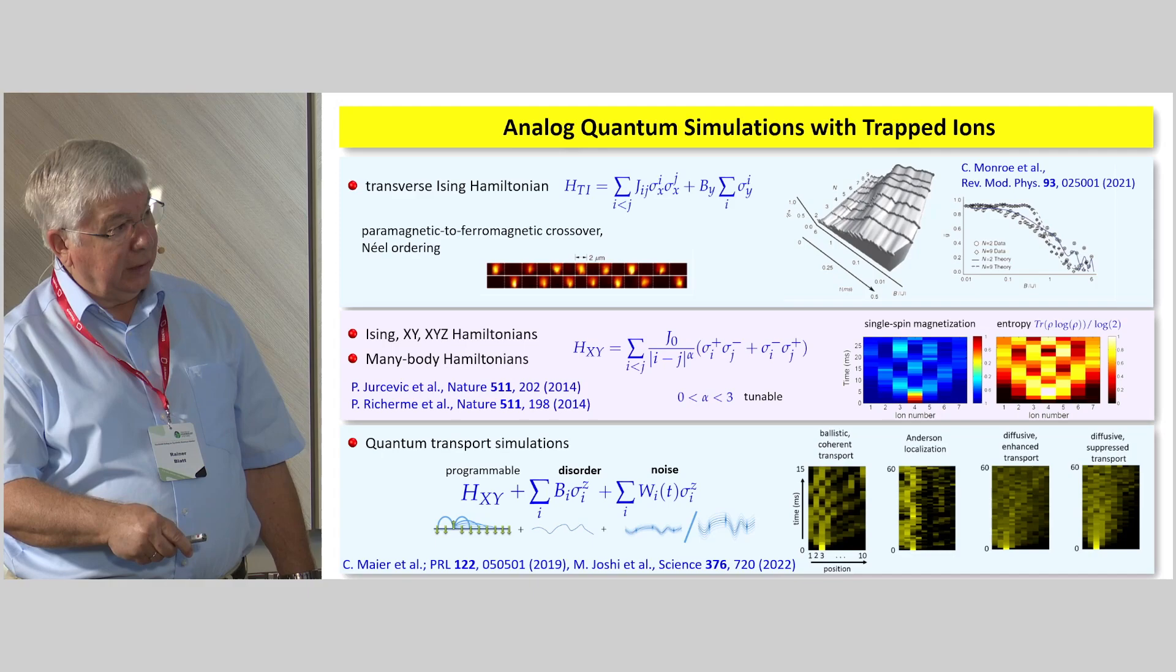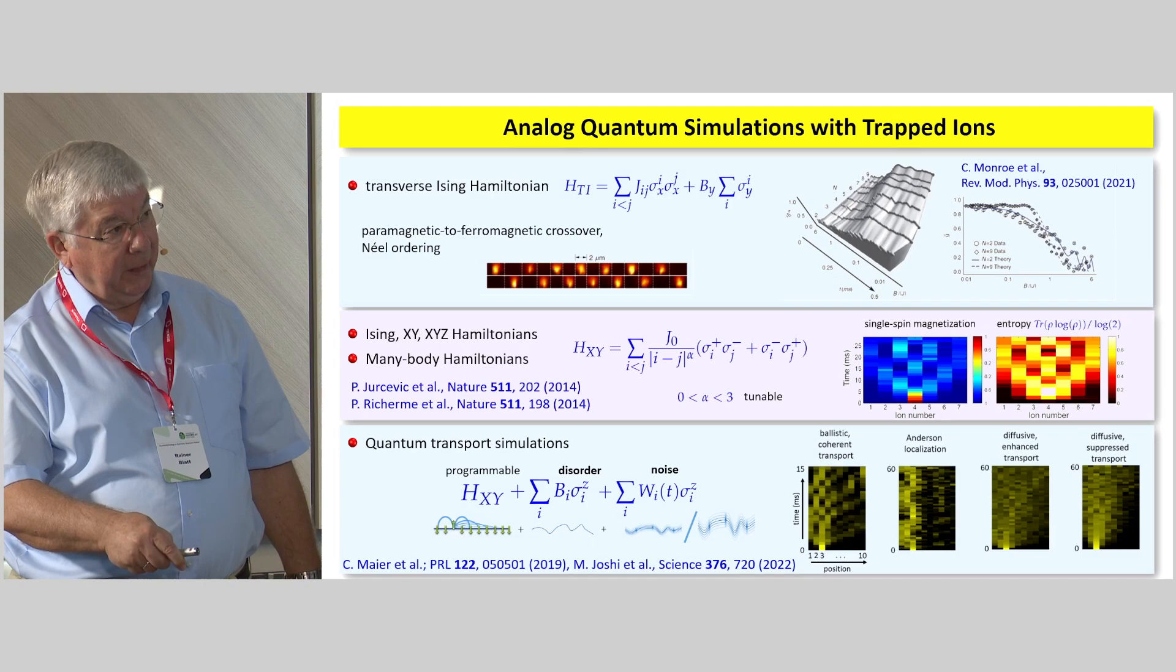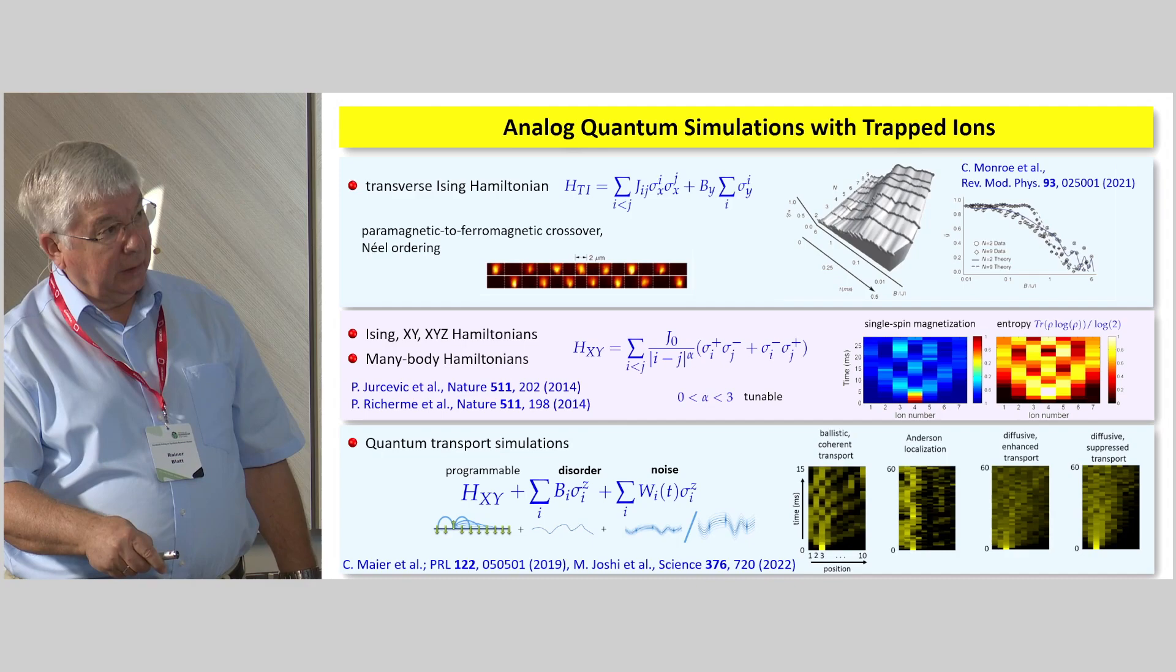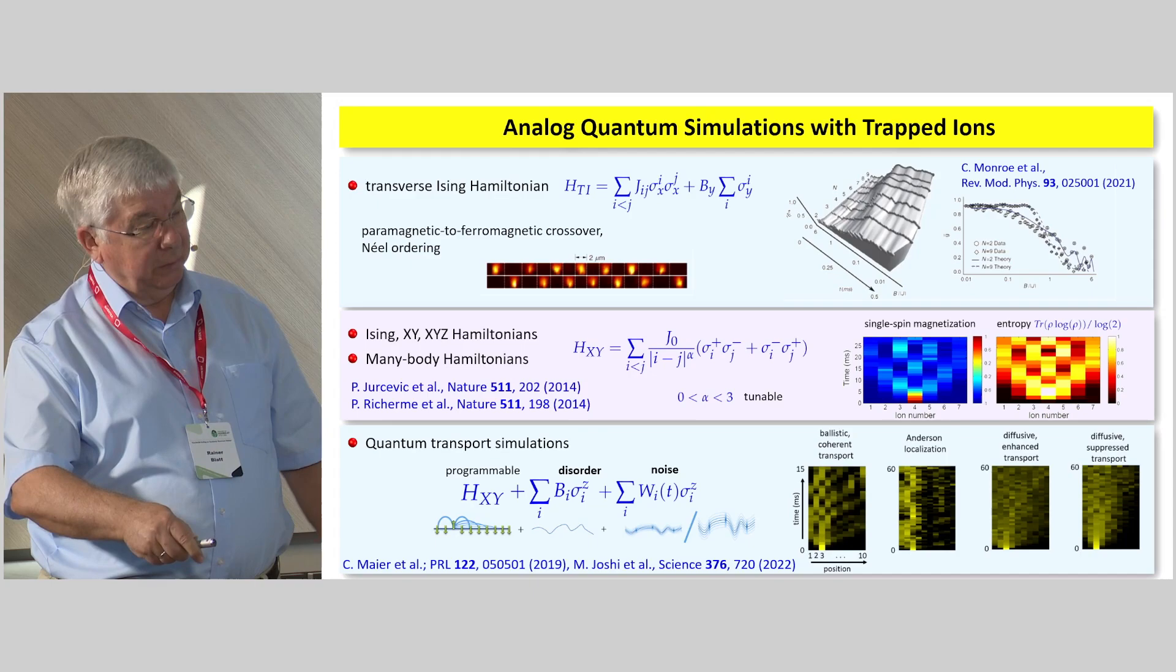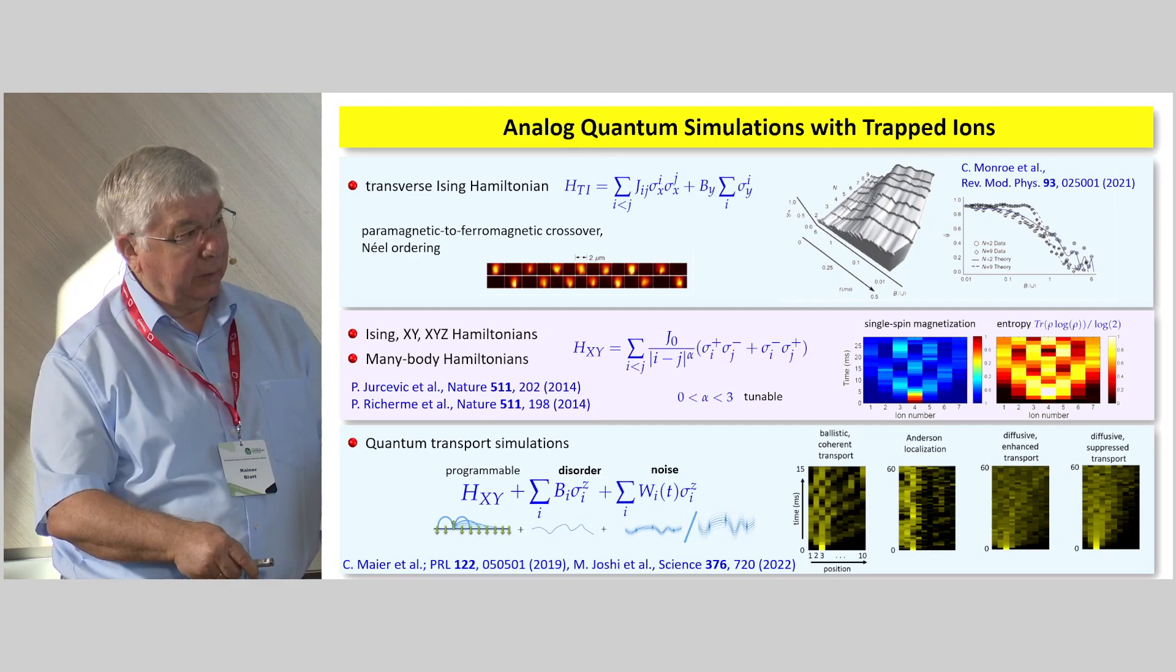So, here is the transport that you see in a ballistic way. Here, the transport is inhibited by Anderson localization, because you have a lot of disorder right here. And then, if you just add the noise, then you get a diffusive-enhanced transport. And even if you add too much noise, then, of course, the transport gets, of course, hindered by Zeno effects and things like that. There's even hydrodynamic behavior that you can see. Lots of these things have been done over the last five years in the groups.